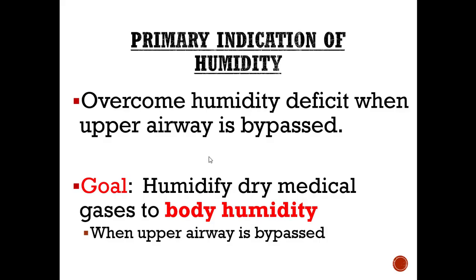With a nasal cannula, we're just trying to get the gas to room air humidity — we're not doing all the work; the body still does its natural humidification process. But if you are bypassing the upper airway with a trach, endotracheal tube, or very high flows from a blender, your goal shifts from room air humidity to body humidity. Anytime you bypass the upper airway, the goal is to provide that water vapor content and water vapor pressure — the heat and humidity the nose and mouth would normally provide — so we do not cause damage to their lungs.